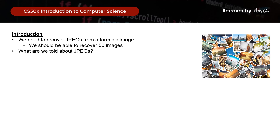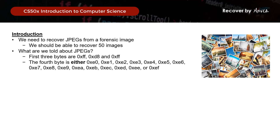What are we told about JPEGs? The first 3 bytes of a JPEG are 0xFF, 0xD8, and 0xFF respectively. The fourth byte of a JPEG can be any of these 16 bytes. As long as we detect a pattern where the first 4 bytes are as such, it indicates the start of a JPEG image.